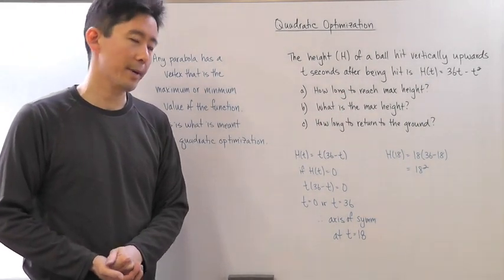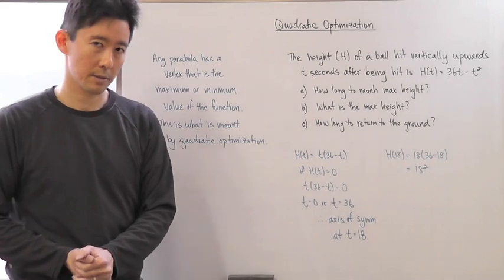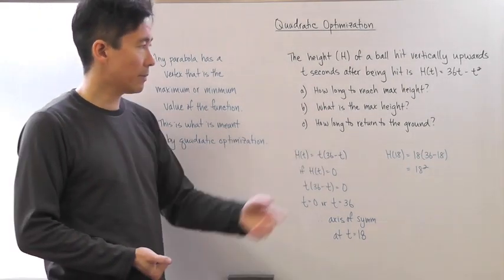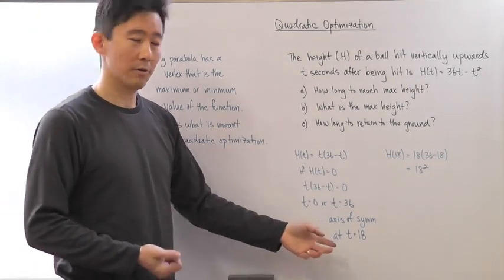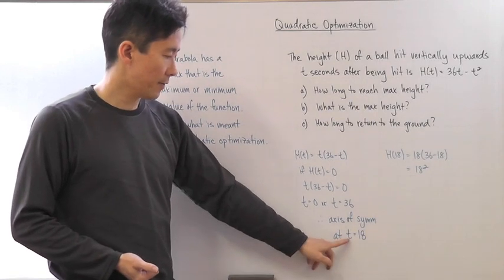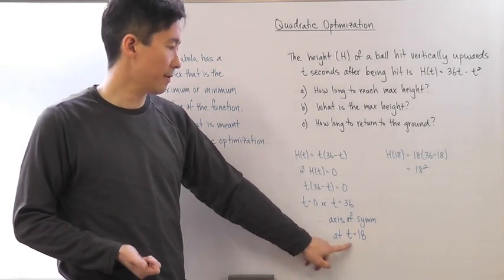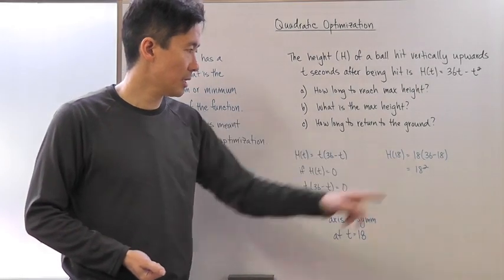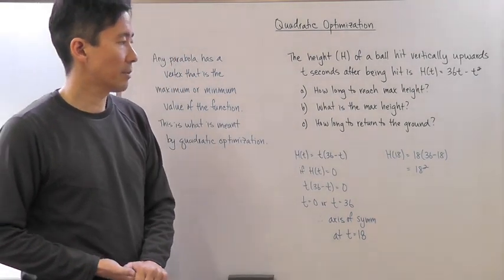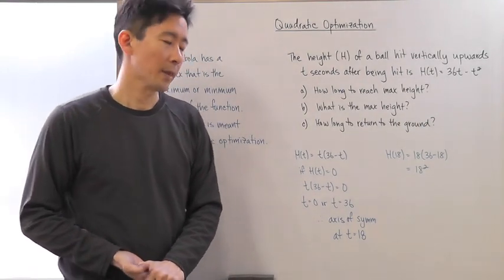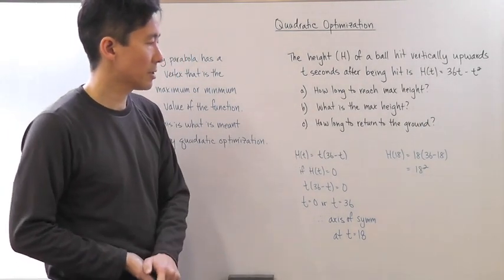Now what is the maximum height? Well, I know that I'm looking for the vertex now. This value over here is the t value for the vertex. Now I need to find the h value of the vertex. So h(18) is just going to be 18 times 36 minus 18, which is 18 squared. And so there you go, I've answered all those questions.